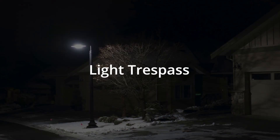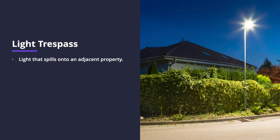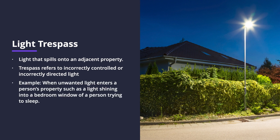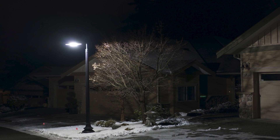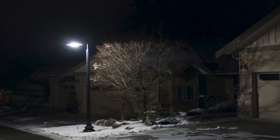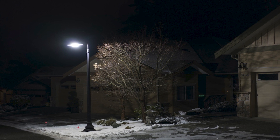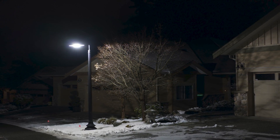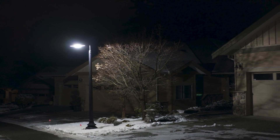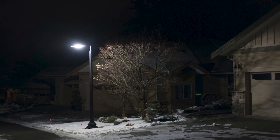Another form of light pollution is light trespass. Light trespass is light that spills onto an adjacent property — it refers to incorrectly controlled or incorrectly directed light. An example of light trespass is if you were sleeping and your neighbor's light came into your bedroom window. You were trying to sleep but were unable to because the light was too bright, coming either from a neighbor's property or a nearby street light. Light trespass is quite an annoyance for people who try to sleep at night when the neighborhood is just too bright.